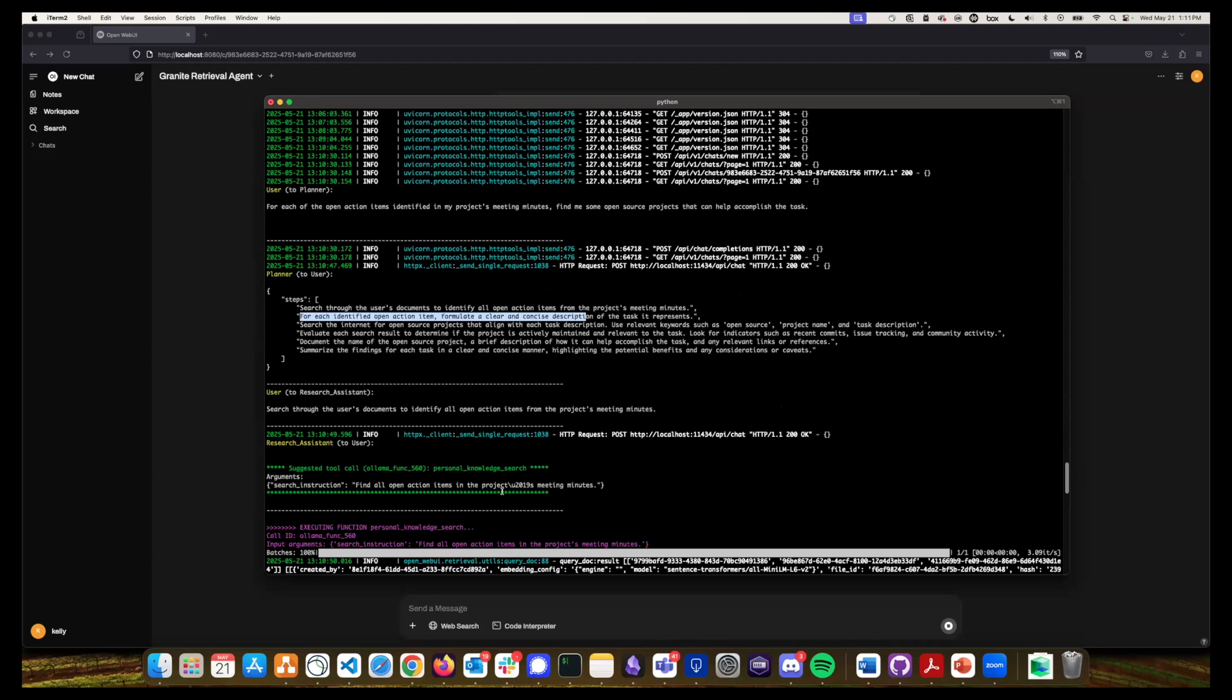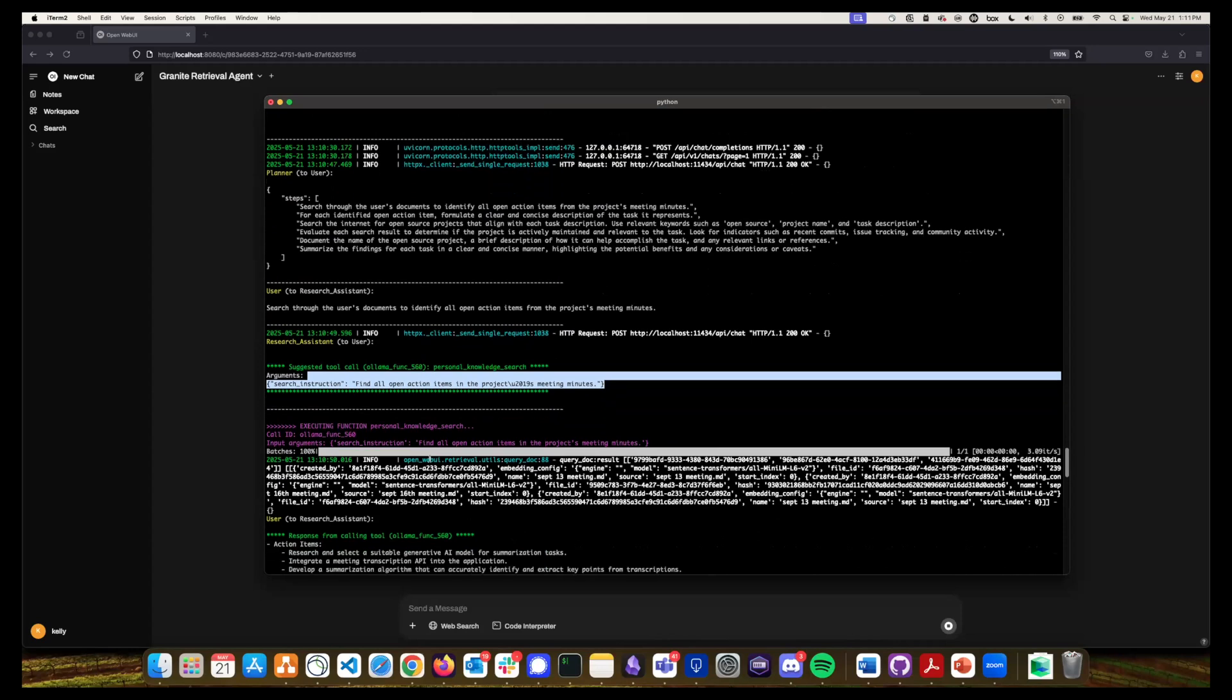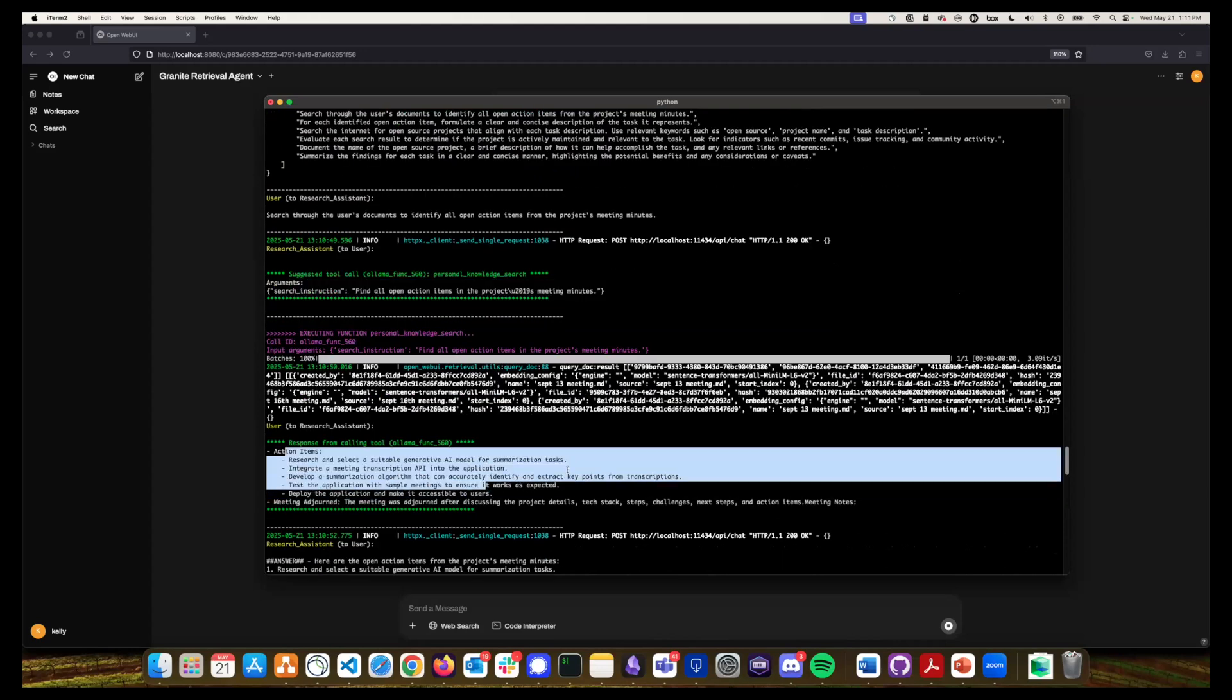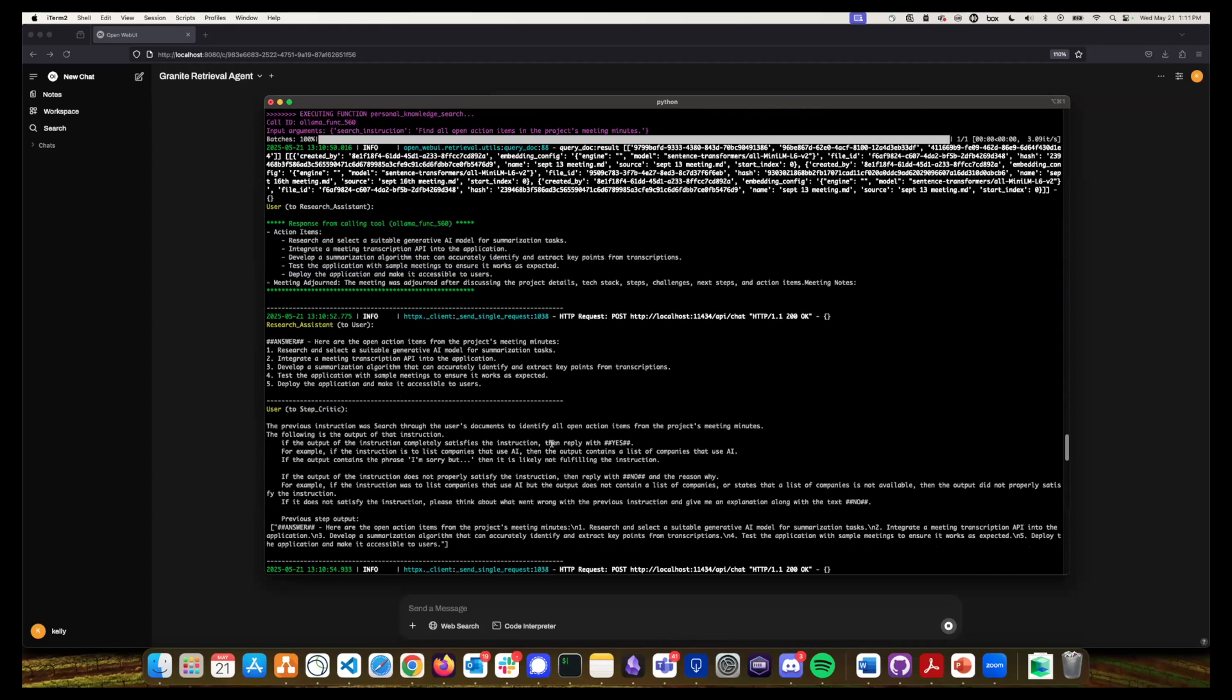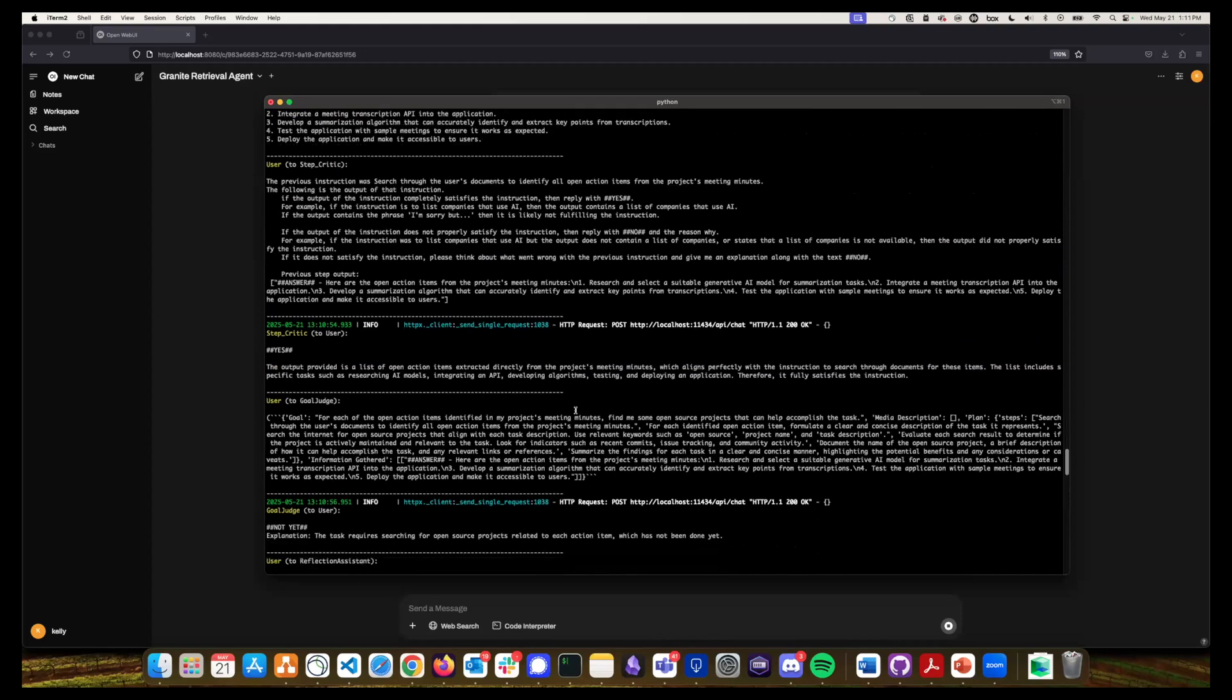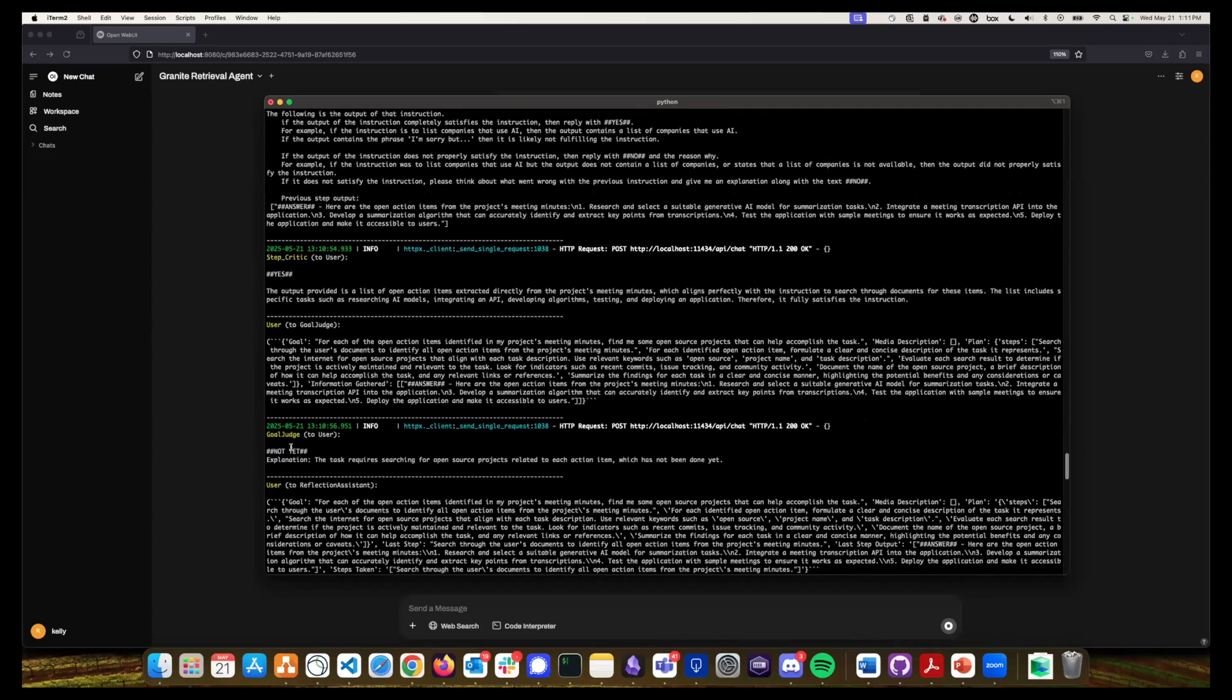So first step, it figures out if I'm searching through the documents, I've got to use the personal knowledge search tool. So it searches through, it finds the meeting minutes, and here's the action items. And so now we're going to move on to the step critic. Was the step successful? The answer is successful. And we're going to ask the goal judge, did we meet our goal yet? And the answer is not yet. So we keep going.